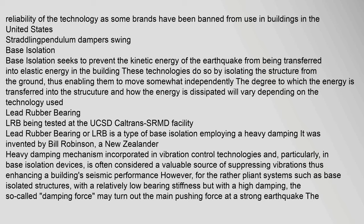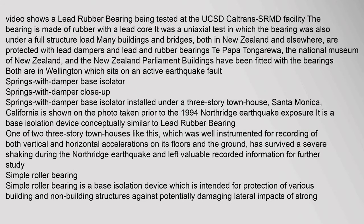A lead rubber bearing is made of rubber with a lead core. Many buildings and bridges in New Zealand and elsewhere are protected with lead dampers and lead and rubber bearings. Te Papa Tongarewa, the National Museum of New Zealand, and the New Zealand Parliament Buildings have been fitted with these bearings, both located in Wellington, which sits on an active earthquake fault. A springs-with-damper base isolator installed under a three-story townhouse in Santa Monica, California, survived the severe shaking during the 1994 Northridge earthquake.